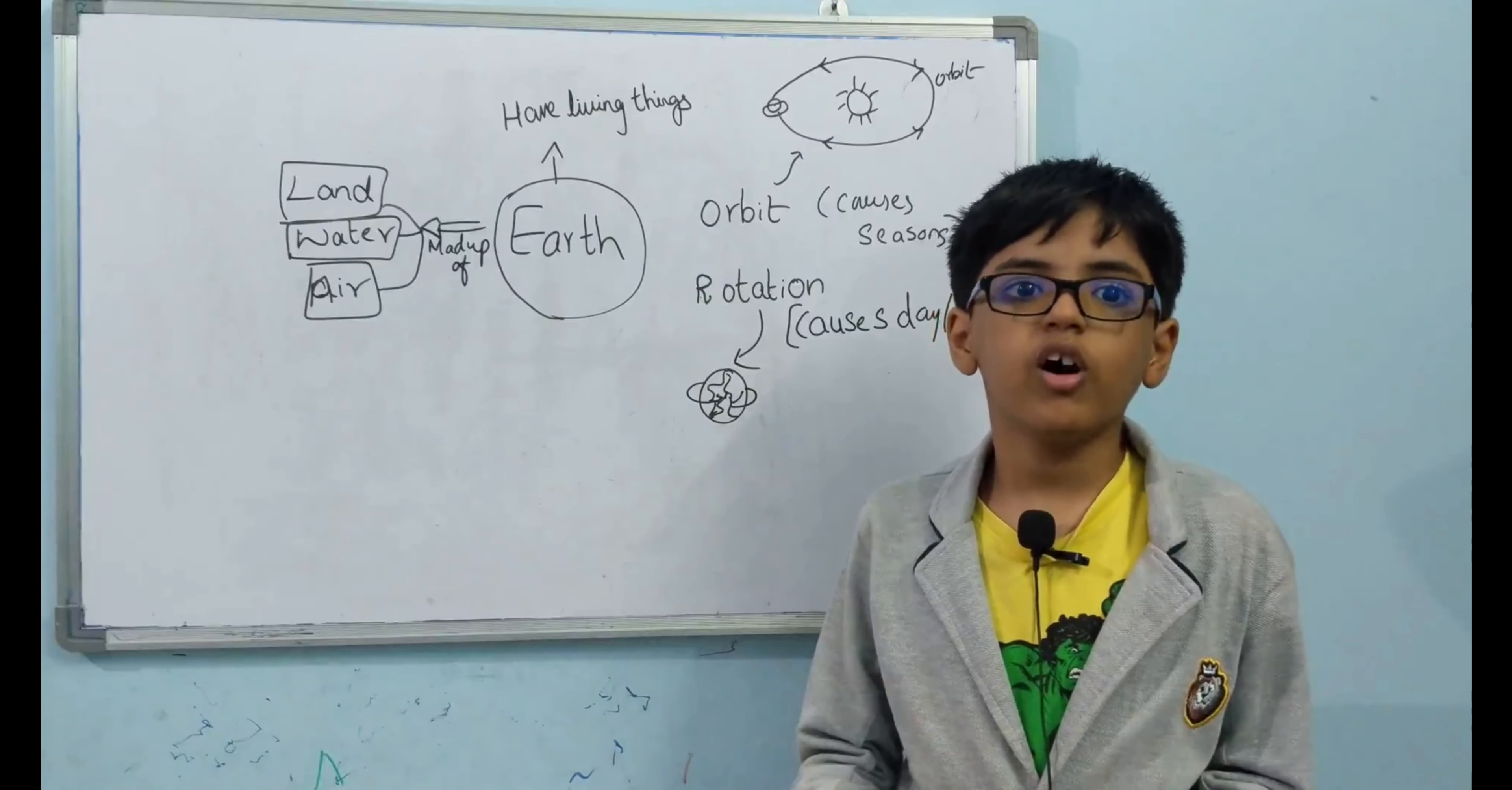For example, Earth is a board and the sun is a bright torch. But if the sunlight comes towards the Earth, what happens? Yes, only half of the Earth is light and half of the Earth is dark. It has night and day.